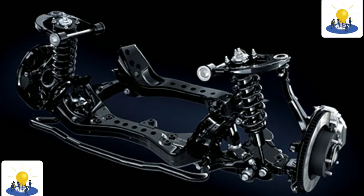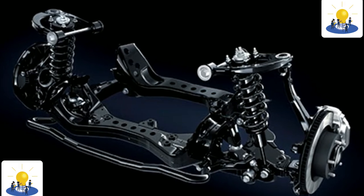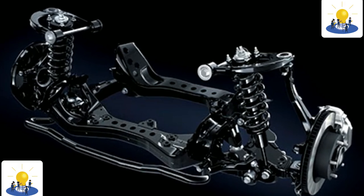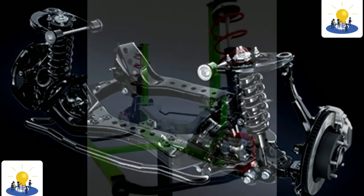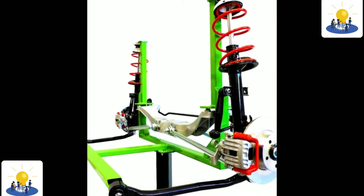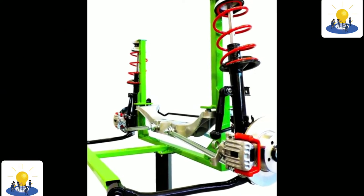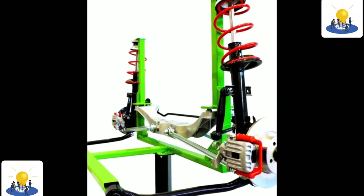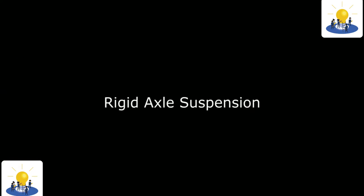Rigid axle suspension. Rigid axle suspension is usually placed at the rear of the car. The main feature of this suspension is its wheels on the rear left and right. The two wheels are connected into one axle, which is commonly referred to as the axle.